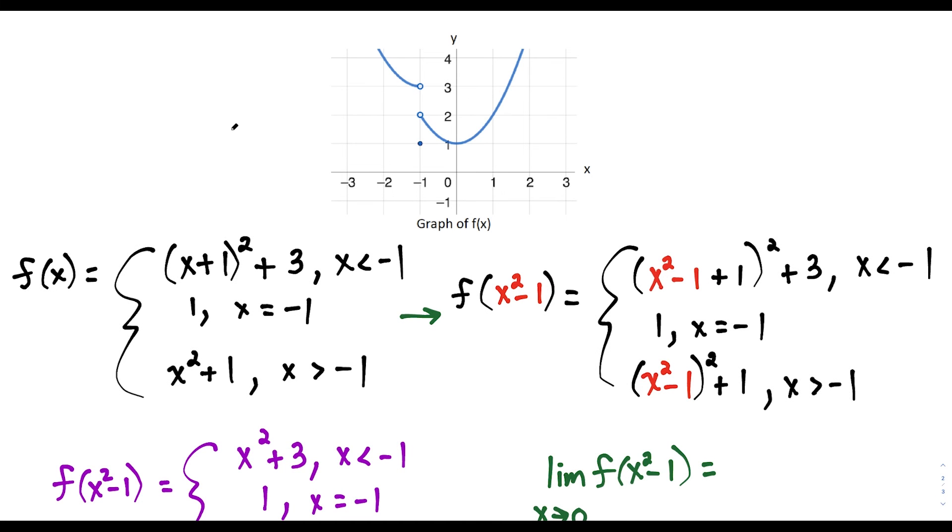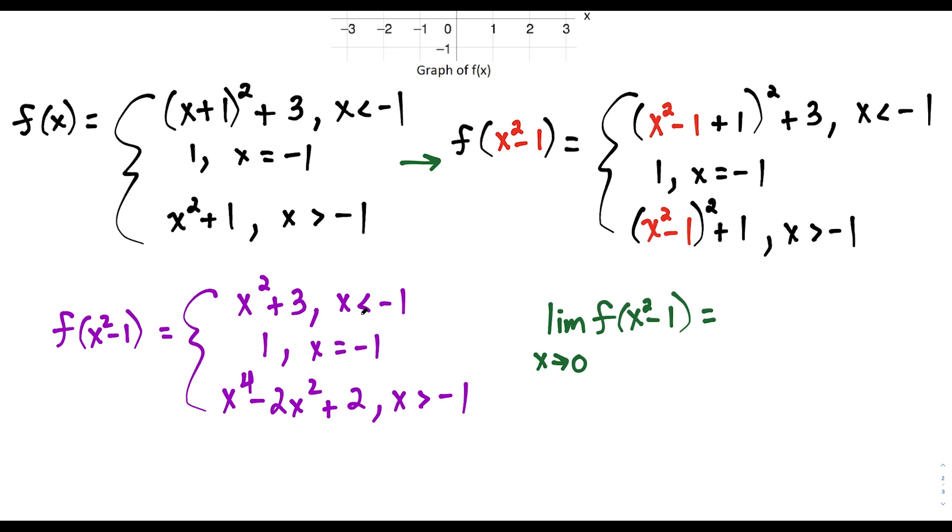But now let's say that explanation didn't do this justice. This is the actual function f of x that I used to build this graph here. And if I replace each x with x squared minus 1, notice what I'm going to get on the inside of this piecewise function. And if I simplify it, I'm going to get this equation here in purple.